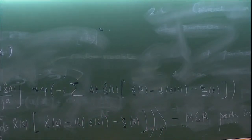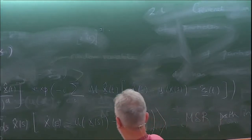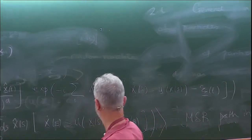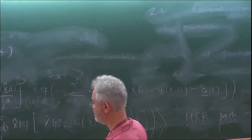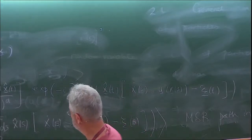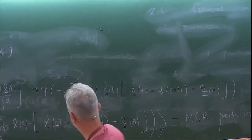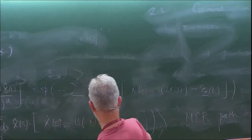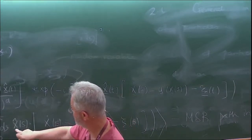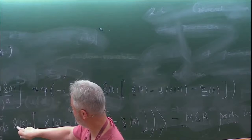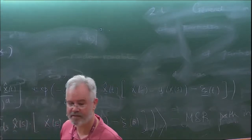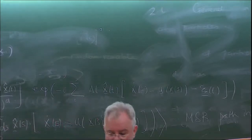So you just take the stochastic equation of motion, write the equation of motion in the exponent, integrate it against the conjugate field x̂(s), and then integrate over the noise. This is the Martin-Siggia-Rose path integral. When u is nonzero, expanding (ẋ - u)² gives ẋ² - 2ẋu + u² terms, and the cross term ẋ·u requires Itô calculus — you can't just integrate by parts classically because of the Itô correction term.